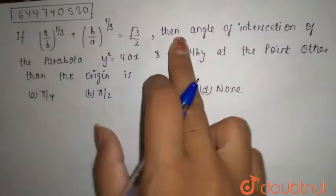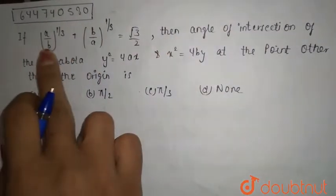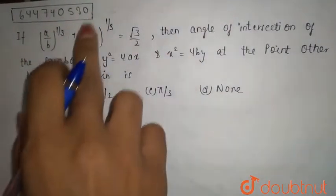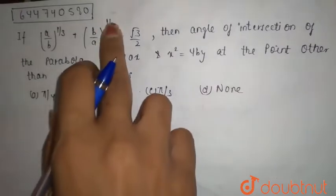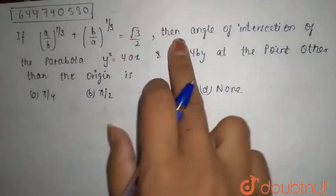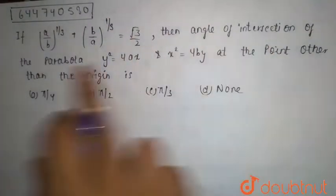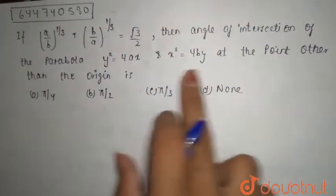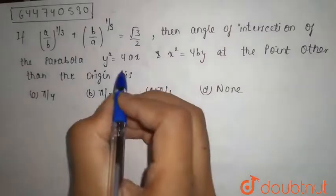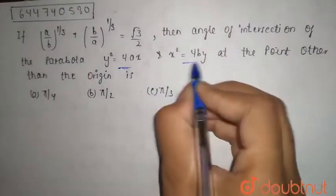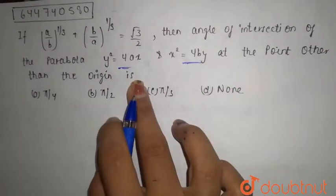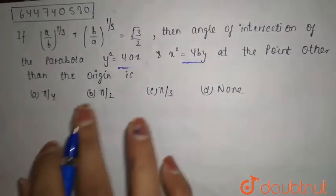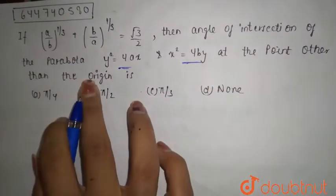Given the equation (a/b)^(1/3) + (b/a)^(1/3) = √3/2, find the angle of intersection of the parabolas y² = 4ax and x² = 4by at points other than the origin. First, note that the two parabolas intersect at the origin, that is (0, 0).